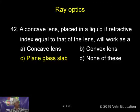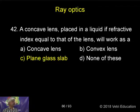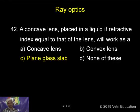The concave lens placed in a liquid — whether the liquid has a refractive index more than, less than, or equal to that of the lens — when the liquid's refractive index equals that of the lens, the lens behaves like a plain glass. No concave or convex behavior.